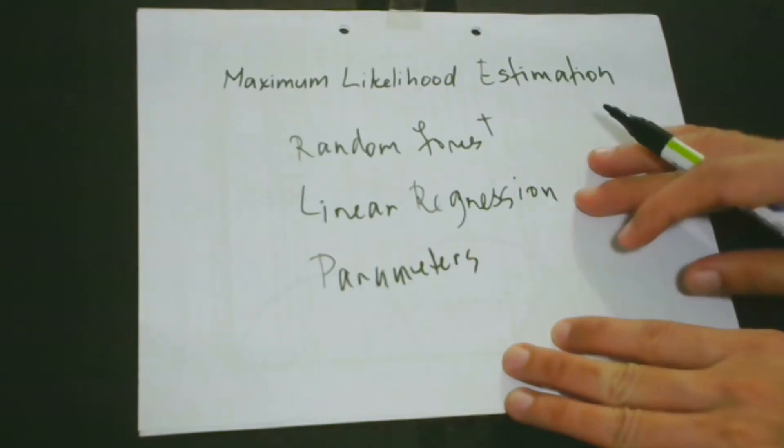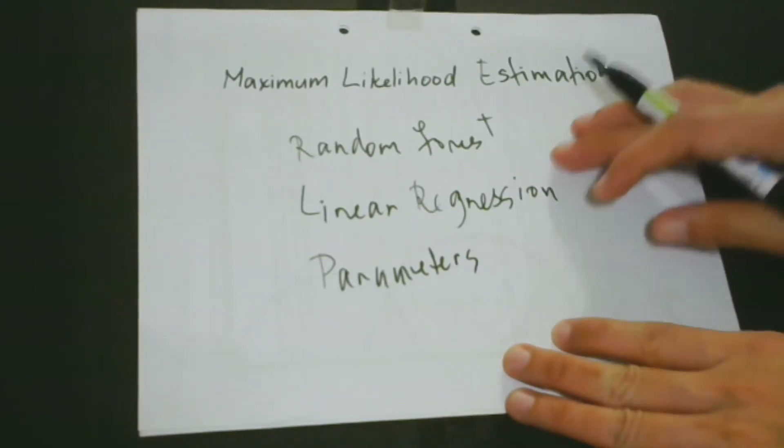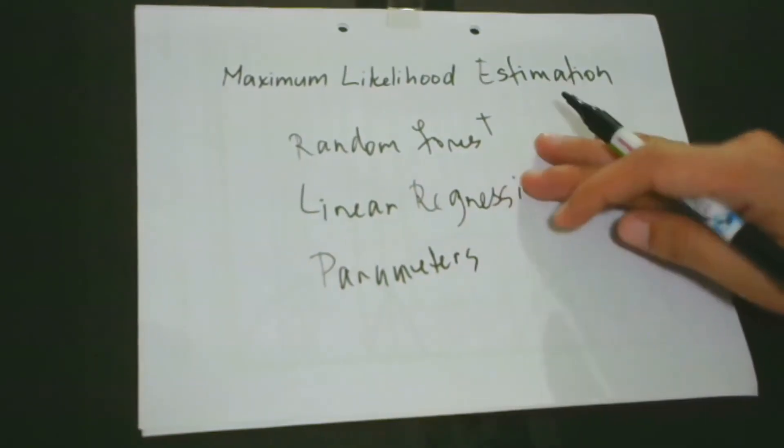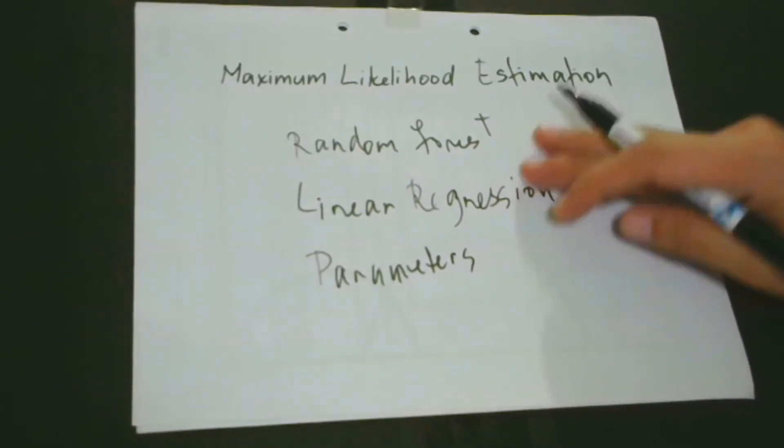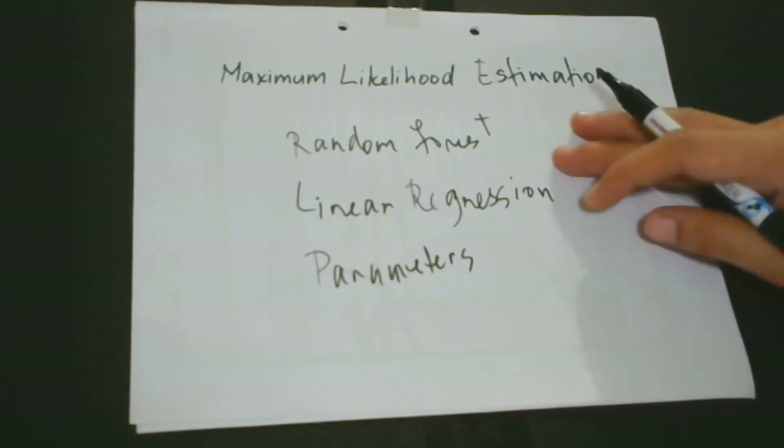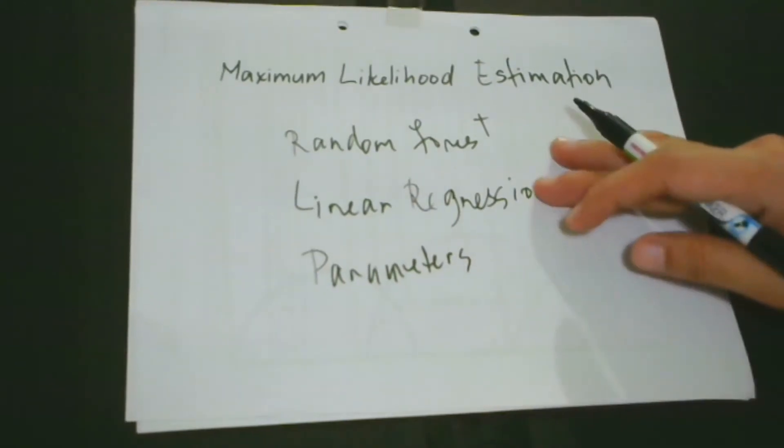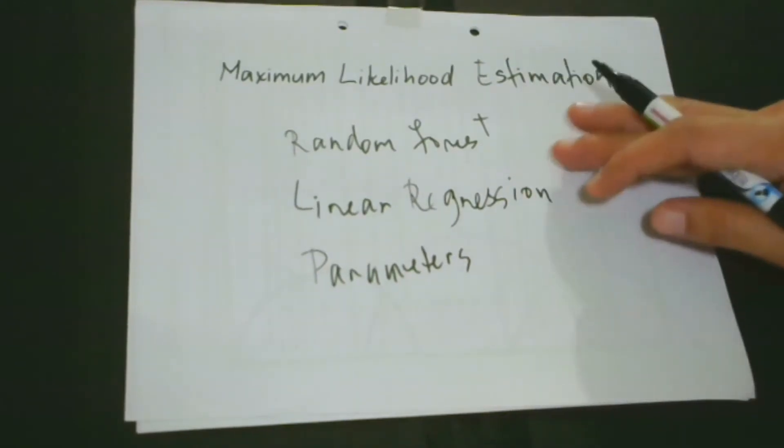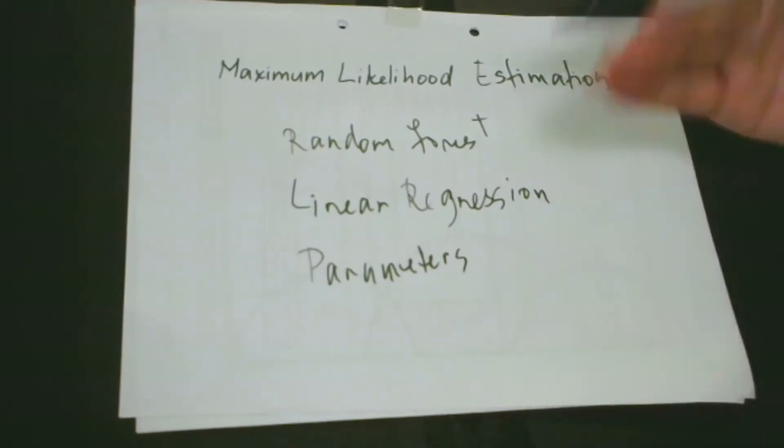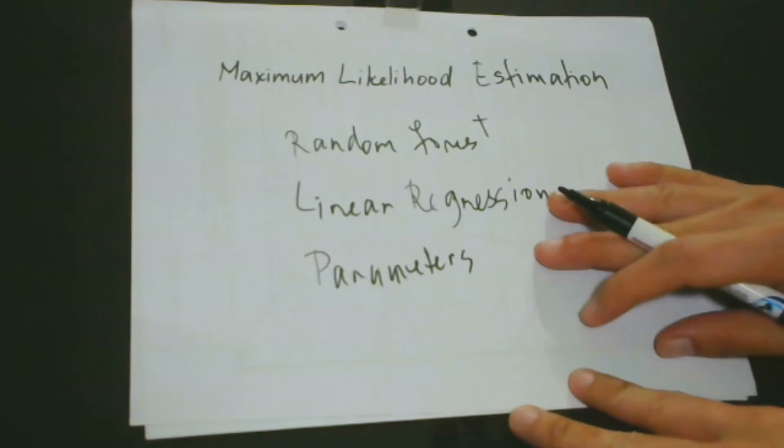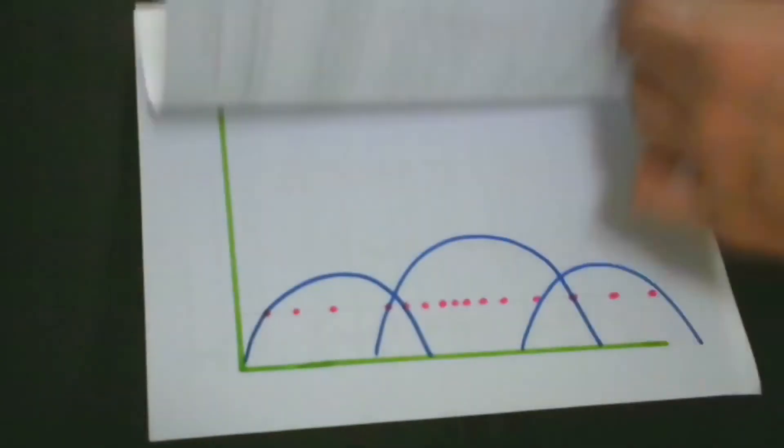The answer is that we need to find these parameters so that we would be able to maximize the likelihood that a certain situation produced by our model illustrates the situation or data that we have actually observed. For better understanding, let's have this illustration.